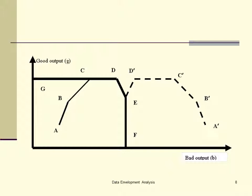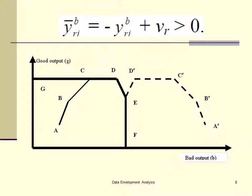Now, the second approach which you can do is you can treat the undesirable output — the bad output — as an input. So in a sense, you want to reduce the input, so you reduce the bad output. In that case, you have a situation where you have one input, which is the bad output, and one output, which is the good output. So the frontier will be A, B, C, and D. Now, the linear transformation that you used — what it actually does is it actually flips A, B, C, D along the E, F axis.